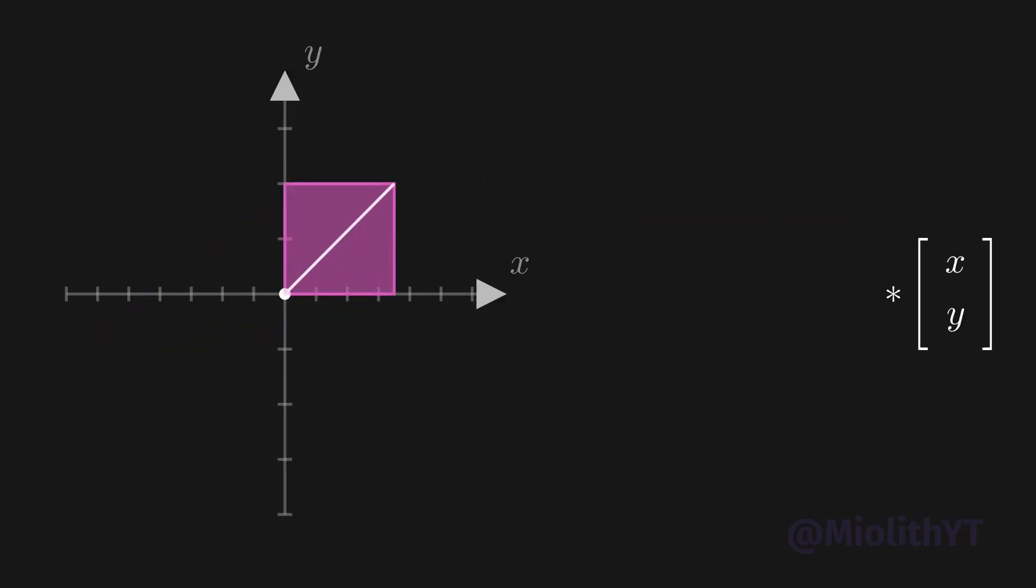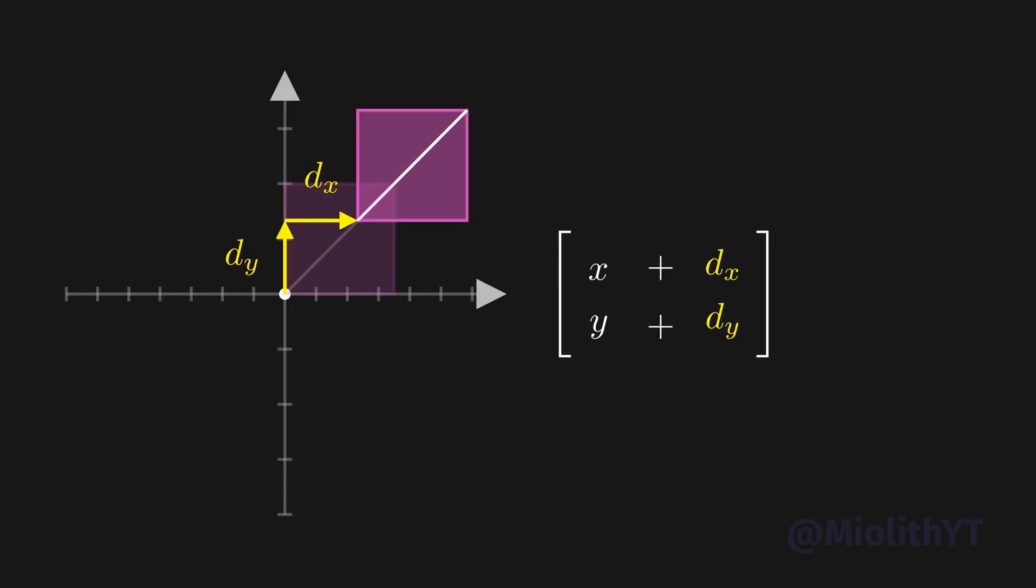But anyway, here's the catch. How do you manage to move it from its origin with such a matrix? The answer, you can't. The solution, you can sum a translation vector to the mix, thereby moving your object in a specified direction on the X and Y axes. Quite simple, right?